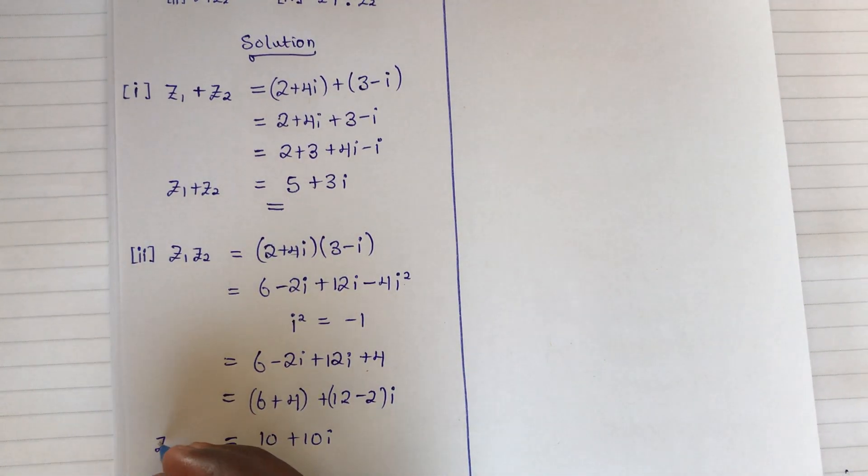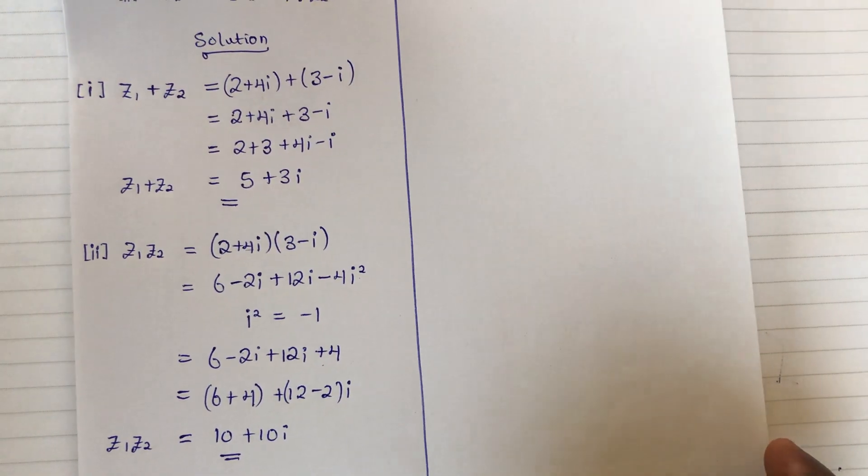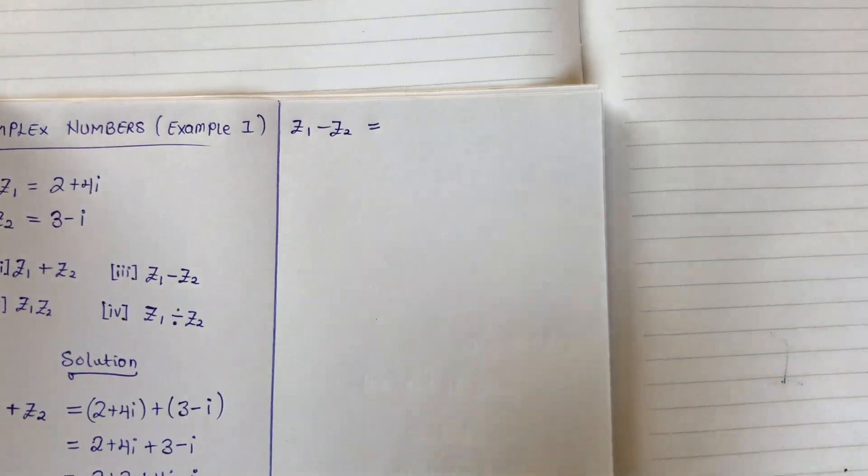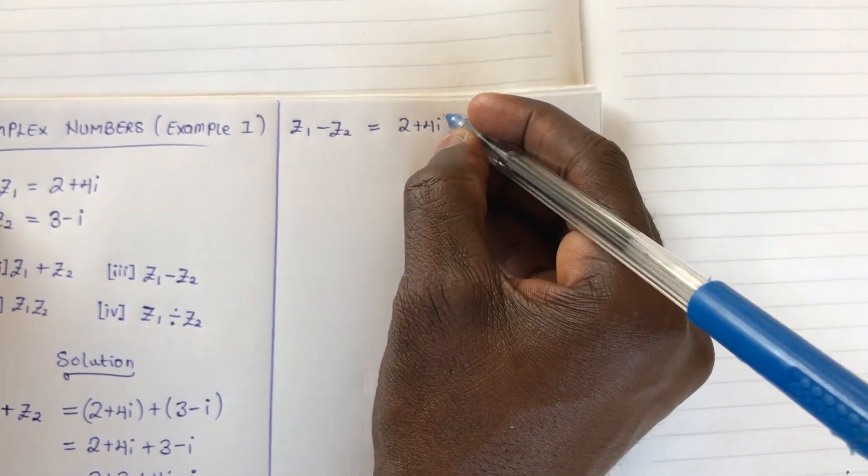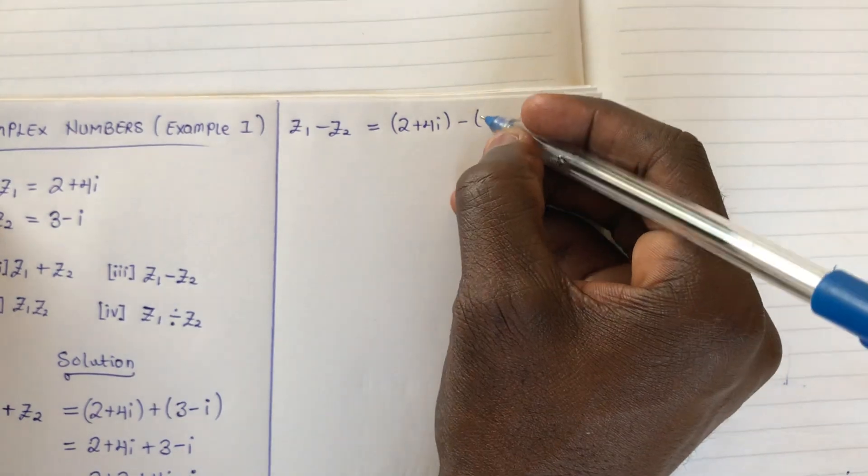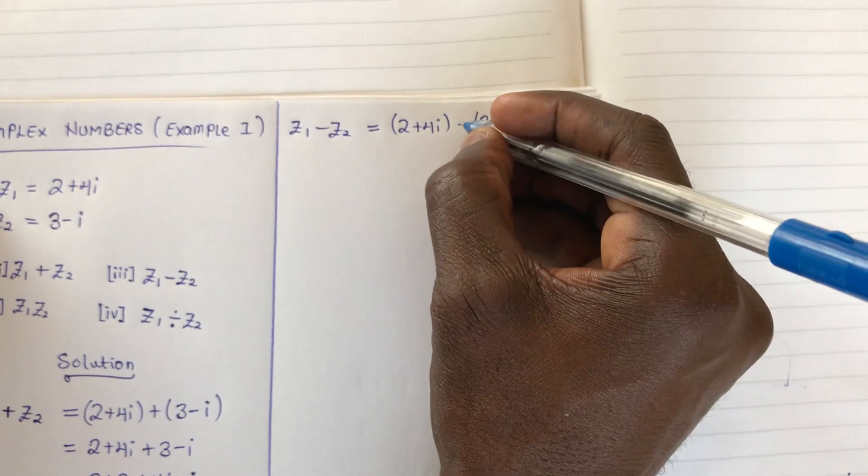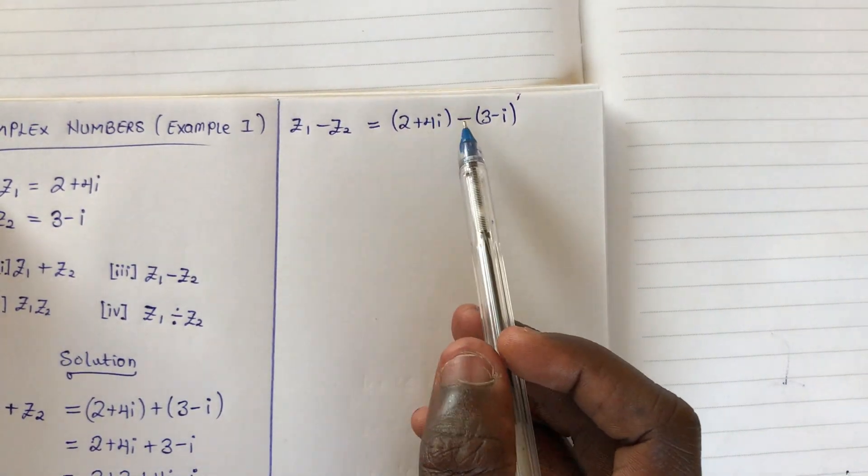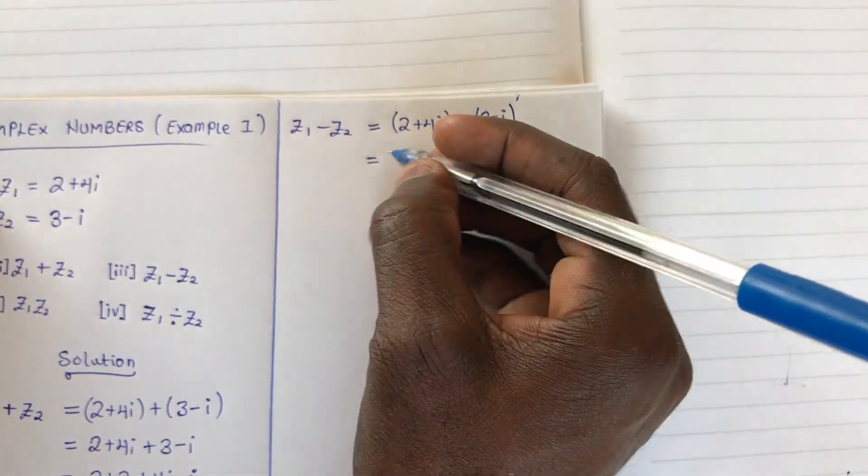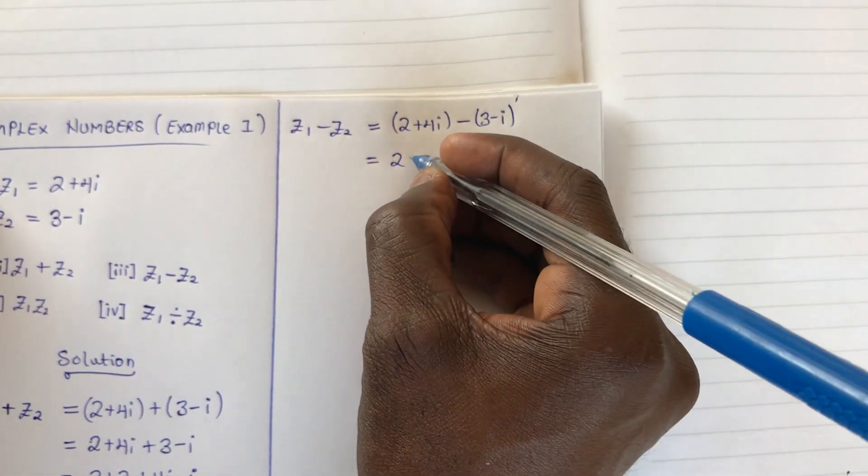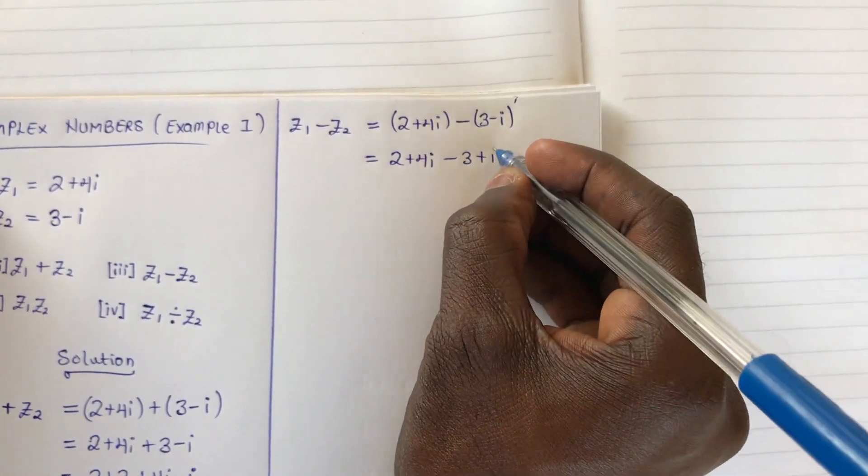Now let's take the third question: z1 - z2. We have (2 + 4i) - (3 - i). Note that the negative affects everything in the bracket, so this becomes 2 + 4i - 3 + i.